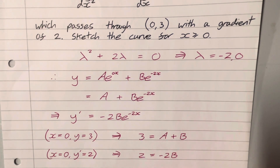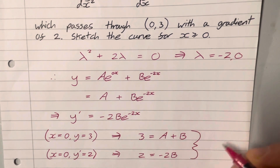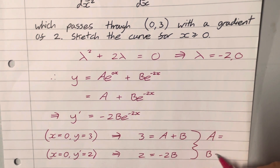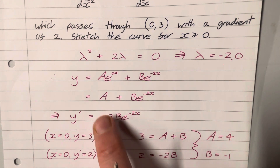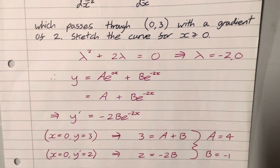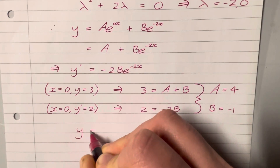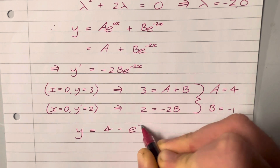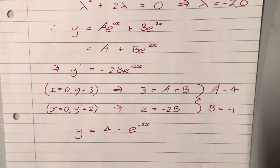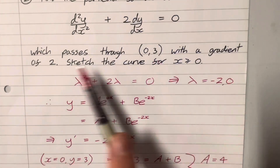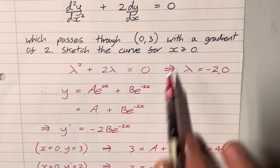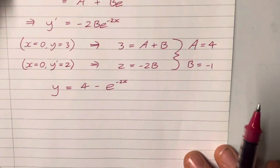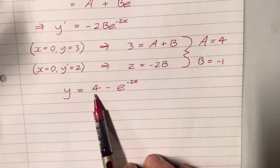This gives us a pair of simultaneous equations, although the bottom equation doesn't contain A. From the bottom equation, B is minus 1, and plugging that into the top equation, A must be 4. Now we put these back into our general solution to get the particular solution: y equals 4 minus e to the minus 2x. This is the only curve which satisfies the differential equation with these two conditions.